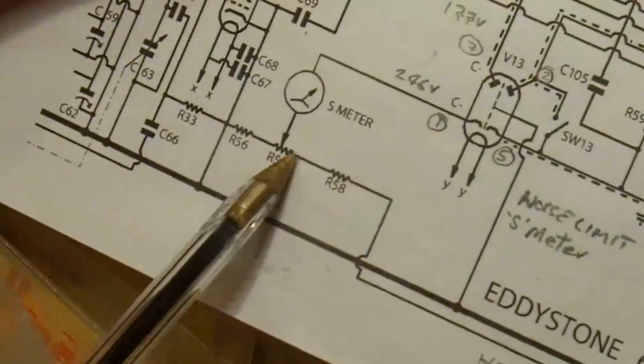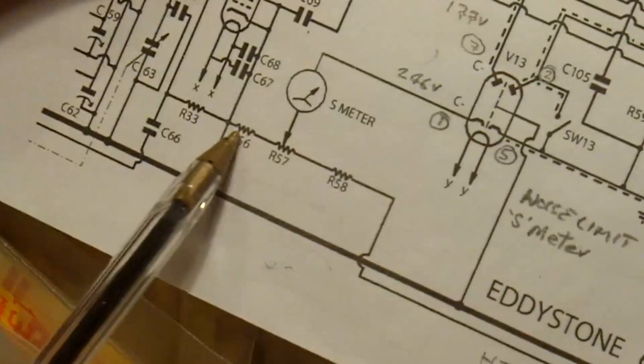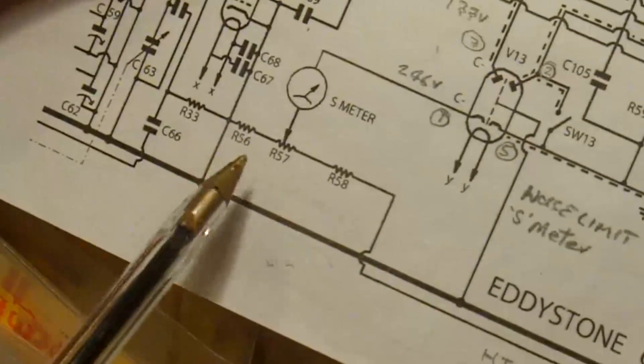What I found was I had 246 volts on each of those three terminals on that pot, and that suggested that resistor being open. There it is, completely open circuit.